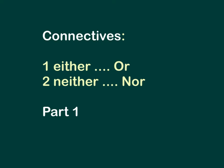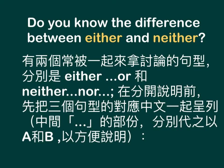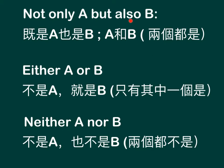We will use two lessons to teach either/or and neither/nor. Do you know the difference between either and neither? There are two sentence patterns often discussed together: either/or and neither/nor. Not only A but also B means 既是A也是B (both A and B). Either A or B means 不是A就是B (only one of them). Neither A nor B means 不是A也不是B (neither one).